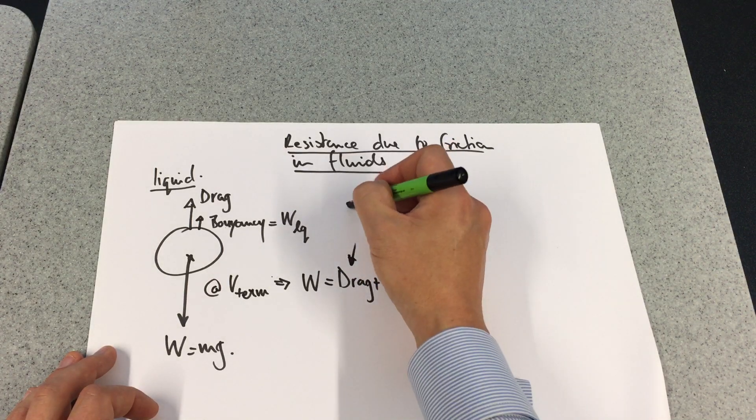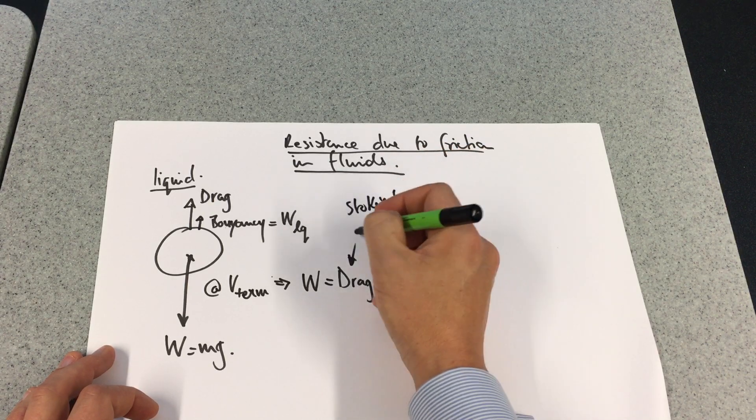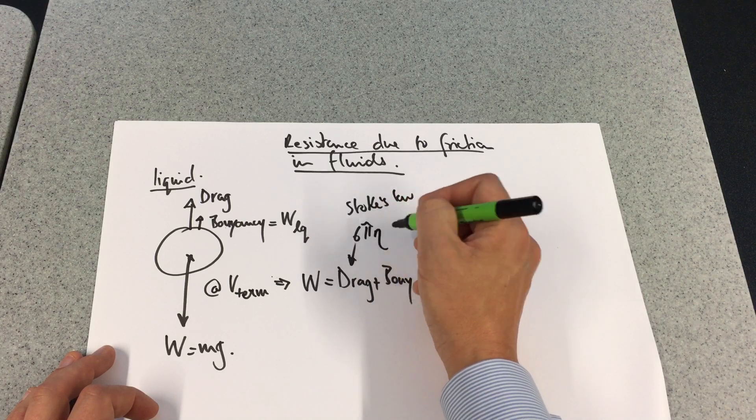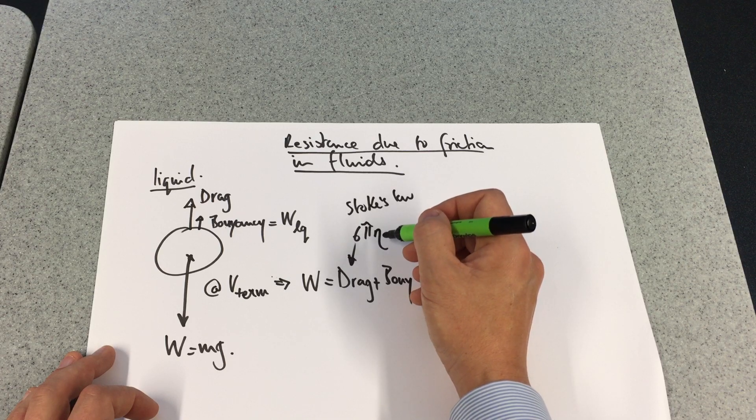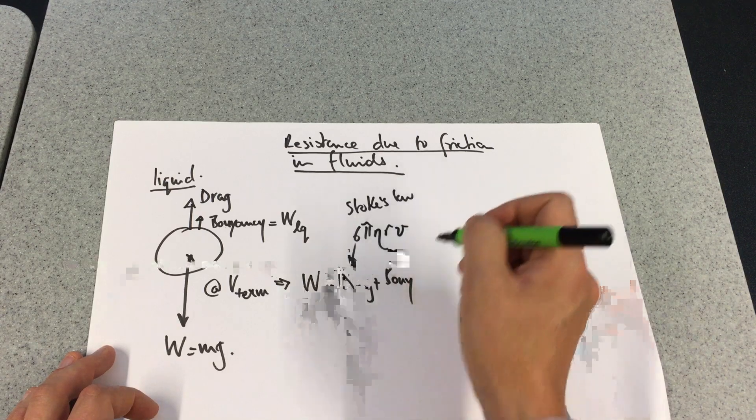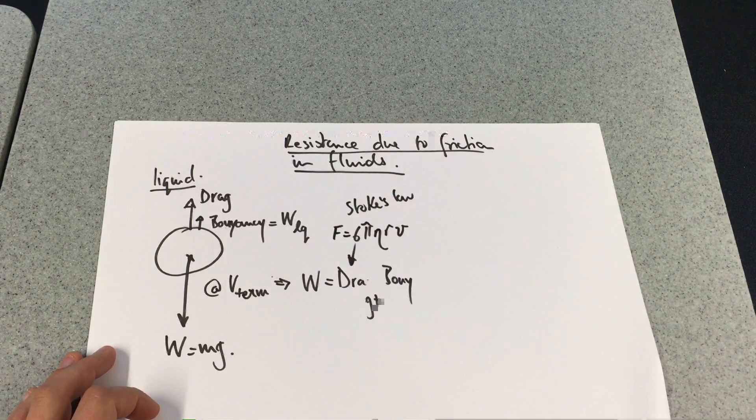It's quantified as 6πν, which is the viscosity of the water, multiplied by the radius of the object and the velocity that's falling through. That's what the force equals, that's Stokes' theorem.